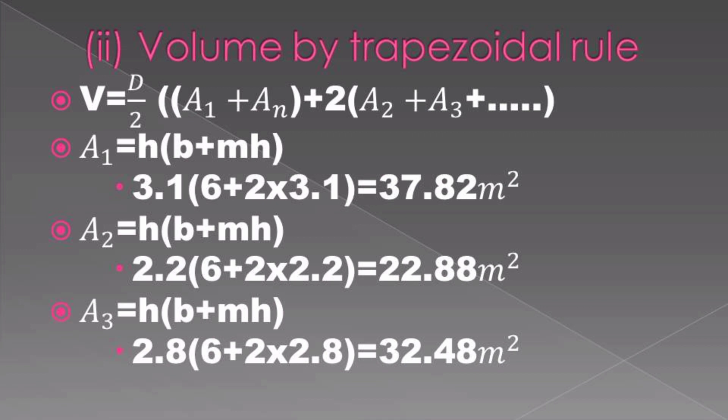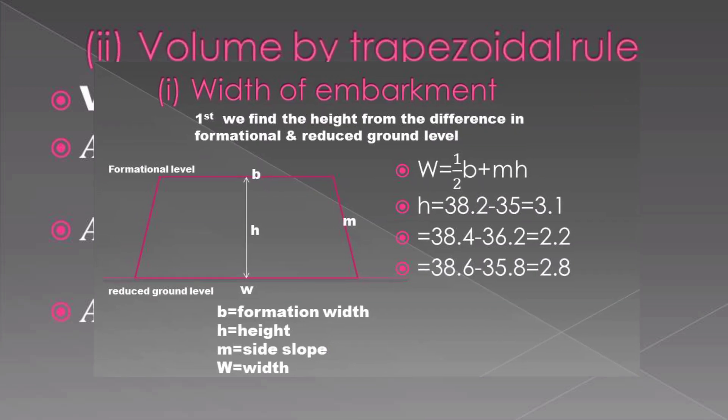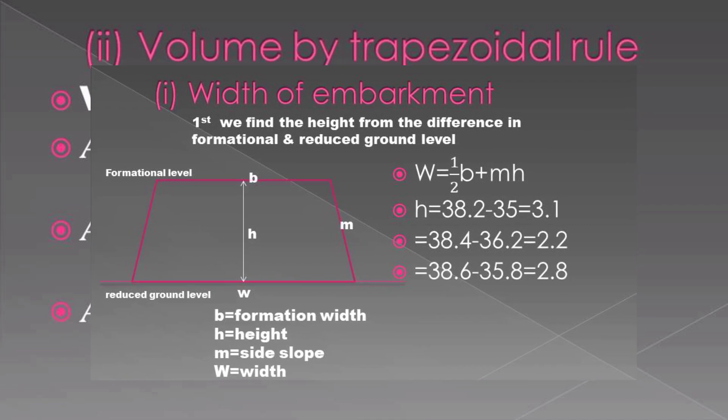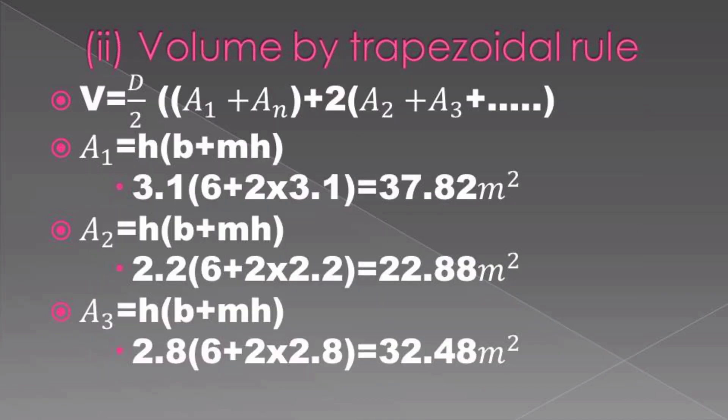Here we need to calculate the different areas from the embankment. The formula for the area is A = h(b + mh). We calculate the areas for the first, second, and third as illustrated in the question, finding the different areas in meters squared.